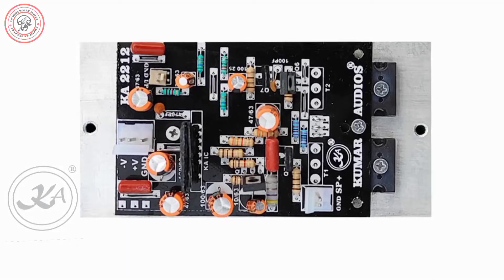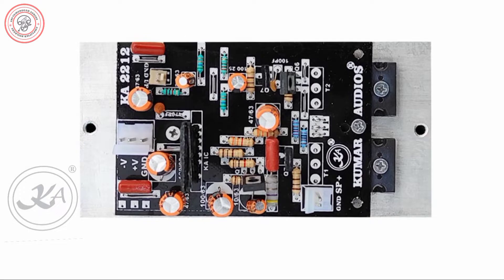Connection details of the module KA2212. IN is mentioned for the input signal; in this connector you have to connect the input signal with respect to ground. Here plus V, minus V, and GND connectors are mentioned for the dual power supply connections. Plus V is for positive voltage, minus V is for negative voltage, and GND is for ground. The SP plus and GND are the output of the amplifier. In SP plus you have to connect the speaker line positive; in GND you have to connect the speaker line negative.